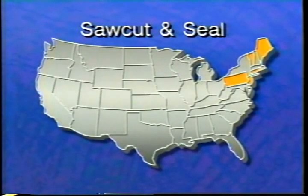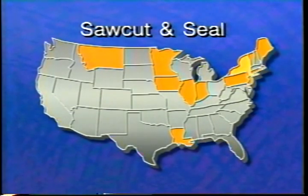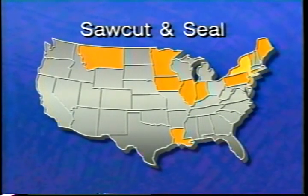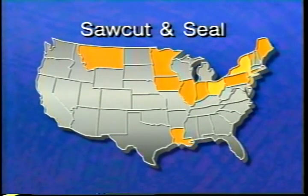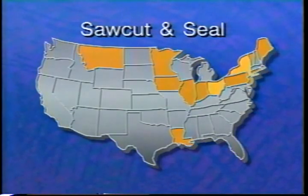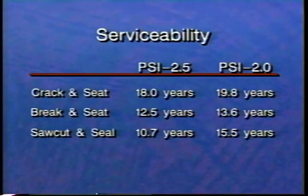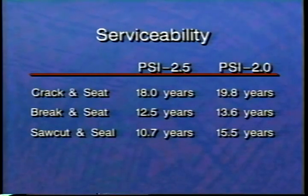The New England states currently lead in the use of the saw cut and sealing technique. New York requires saw cut and sealing as the minimum treatment for preventing reflective cracking problems; after five years of use, the state reports virtually no joint failures in these sections. A report on Ohio's experiences indicates no degradation of ride quality on 26 projects ranging in age up to six years. The PCS Law Report predicts performance lives of 10.7 and 15.5 years for saw cut and seal pavements before reaching pavement serviceability indexes of 2.5 and 2.0 respectively.